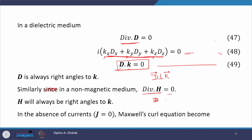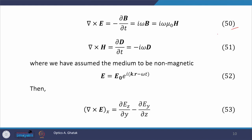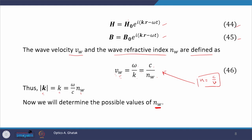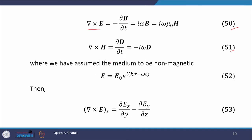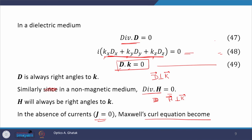In the absence of current, the Maxwell curl equations — curl e and curl h — can be written in the form of equations 50 and 51, where curl e equals minus del b by del t. Taking the time derivative of b and using b equals mu naught h, we get the final expression for curl e. For curl h, which equals del d by del t plus j, but j equals 0, so it equals minus i omega d.